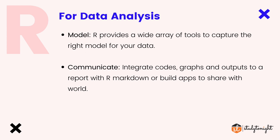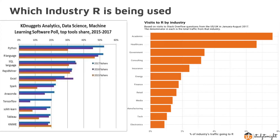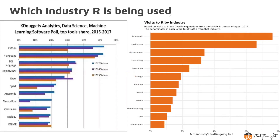Looking at recent visualizations showing trends in R usage, R is majorly used across various industries like academics, healthcare, government, and consulting. Observing this particular visualization, you can find that R is being used in almost every industry.